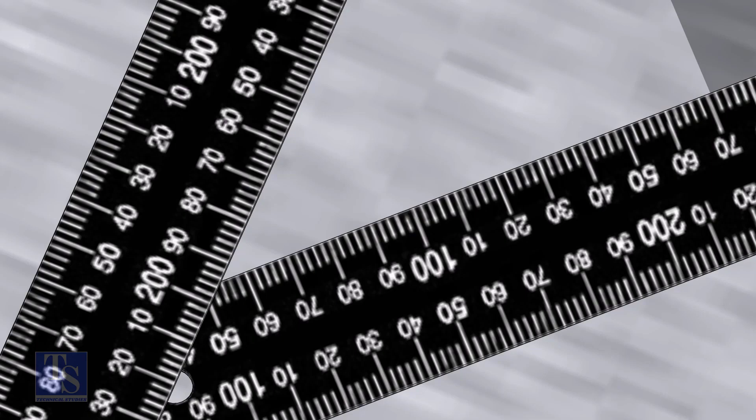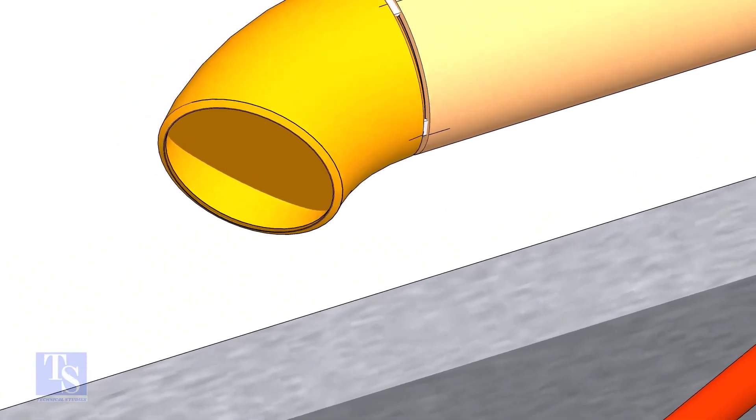Note down the readings. If both the readings are the same, the elbow face is exactly 45 degrees to the pipe.